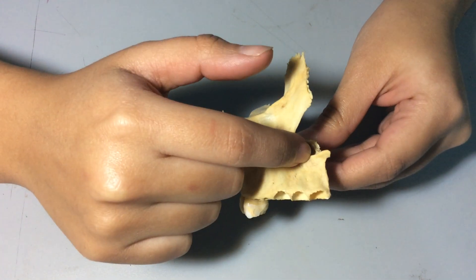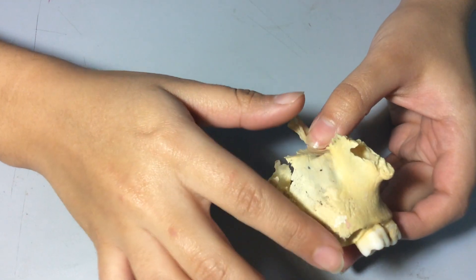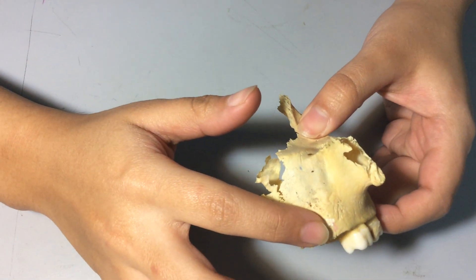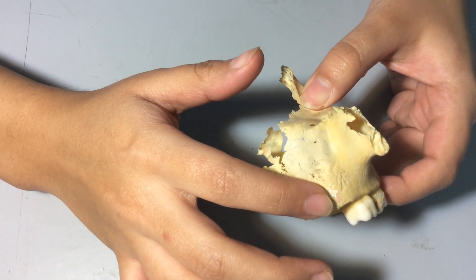We have the nasal notch and anterior nasal spine. On the posterior surface, we have the maxillary tuberosity from where medial pterygoid muscle originates.